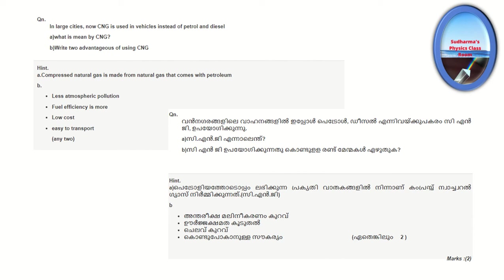In large cities, CNG is now used in vehicles instead of petrol and diesel. What is meant by CNG? Write two advantages of using CNG. CNG is called Compressed Natural Gas. Its advantages include less atmospheric pollution, more fuel efficiency, low cost, and easy to transport.